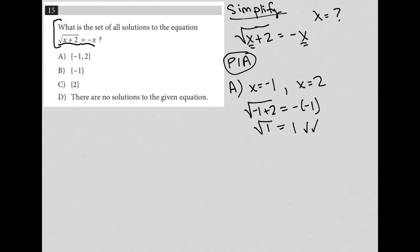Now let's try 2. When I put 2 in, instead of x plus 2, I have 2 plus 2. And instead of negative x, I have negative 2. What I get is the square root of 4 equals negative 2.